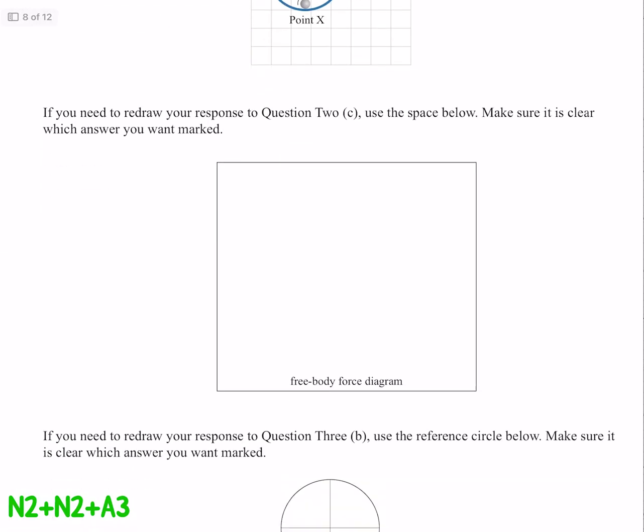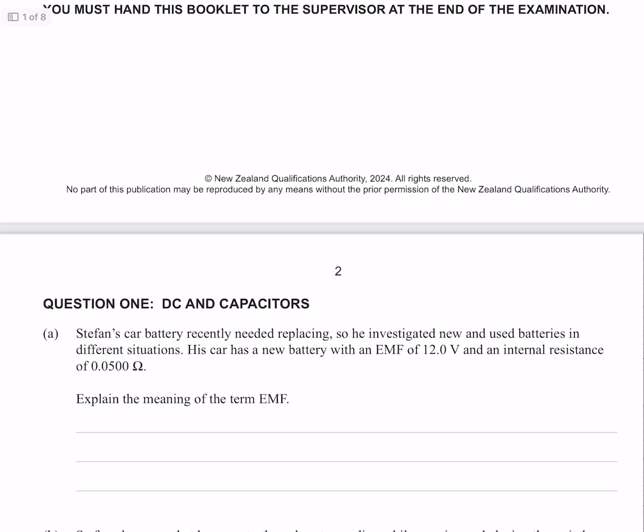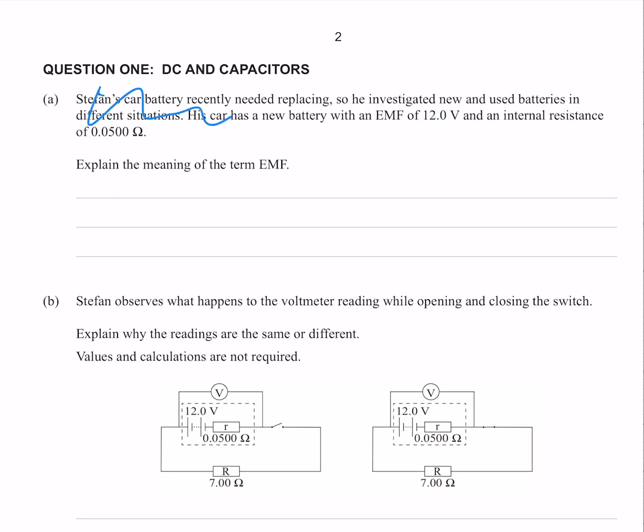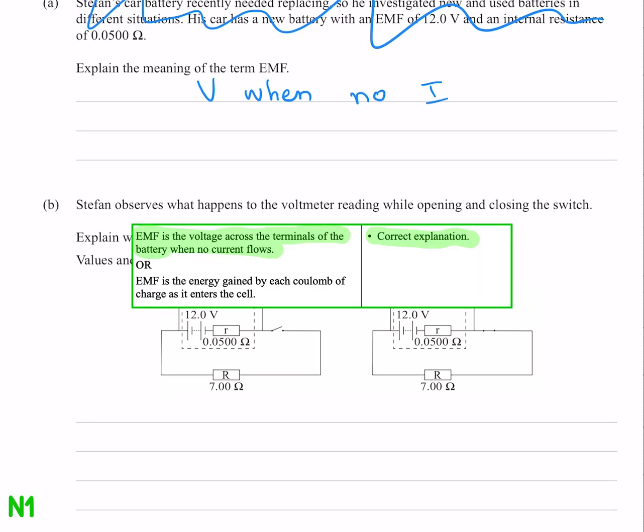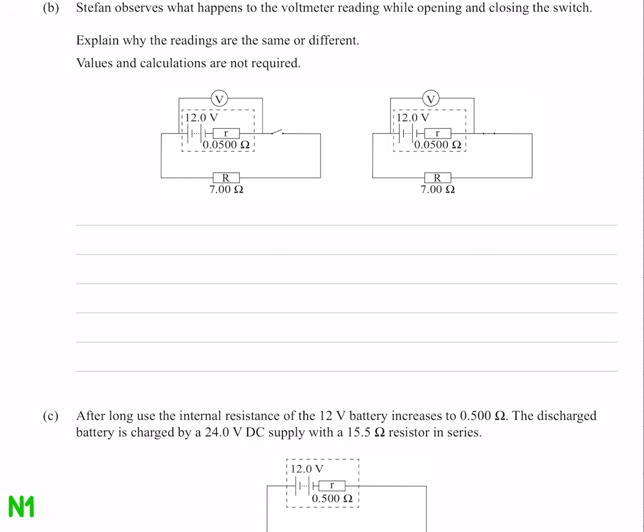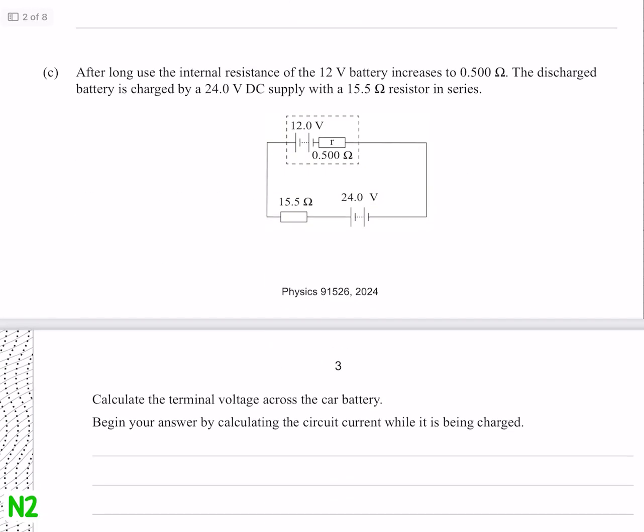Question 1 has some riveting information. Explain the meaning of the term EMF. Well that's the voltage when there's no current. Stefan observes what happens to the voltmeter reading while opening and closing the switch. Explain why the readings are the same or different, values and calculations are not required. To answer this question fully it's going to require some detailed analysis, so you know we're not doing that, but we can look at this section here, see that that switch is open, so we're going to have no current flowing, meaning this voltage reading here is just going to be 12. C looks like a calculation.